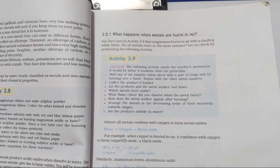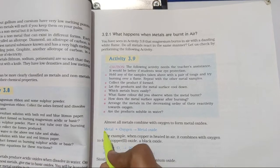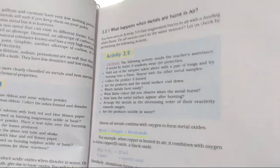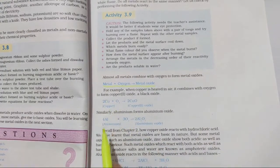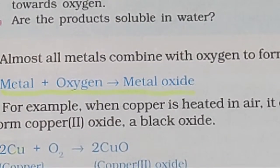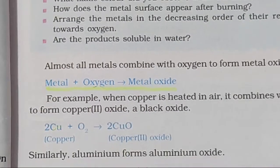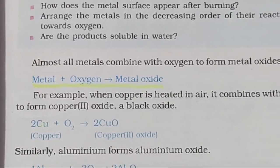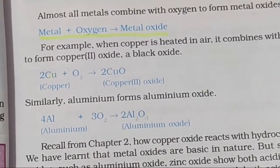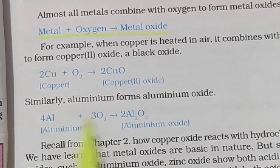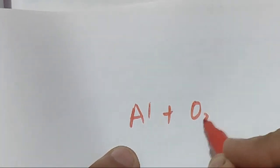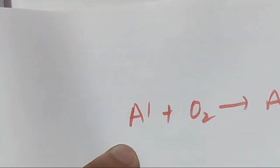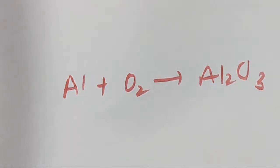The reaction to learn is: metal reacts with oxygen to form metal oxide. There are a few examples given in NCERT: when copper reacts with oxygen it forms copper oxide; when aluminium reacts with oxygen it forms aluminium oxide. These reactions can be asked in the form of balancing an equation, for example: Al + O₂ → Al₂O₃.